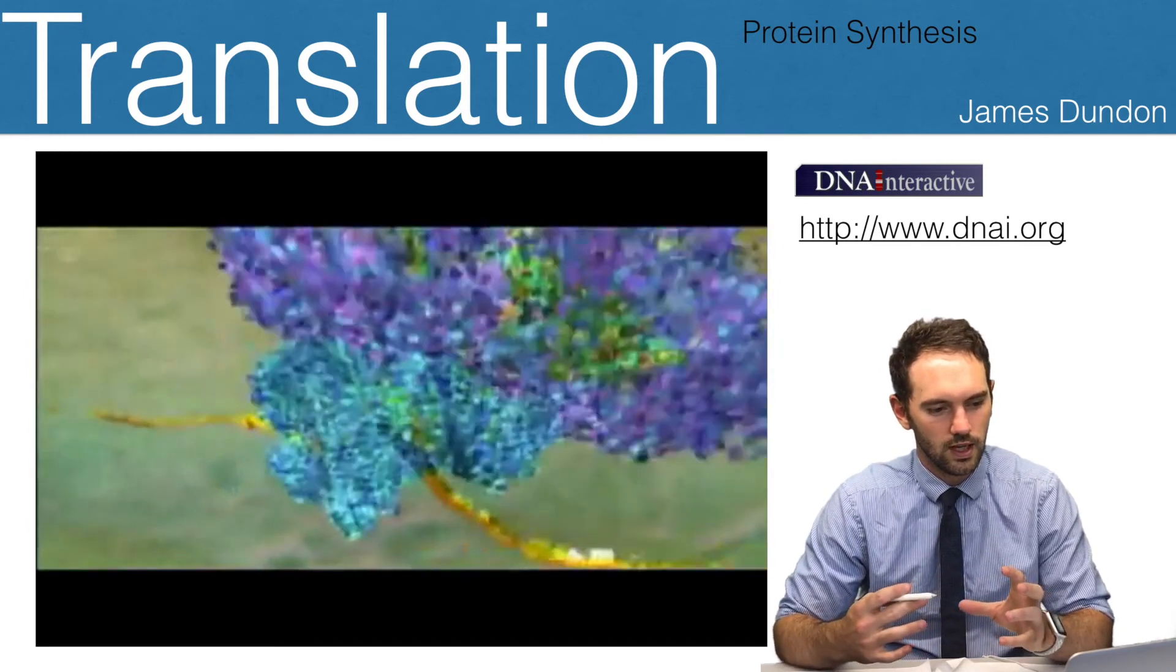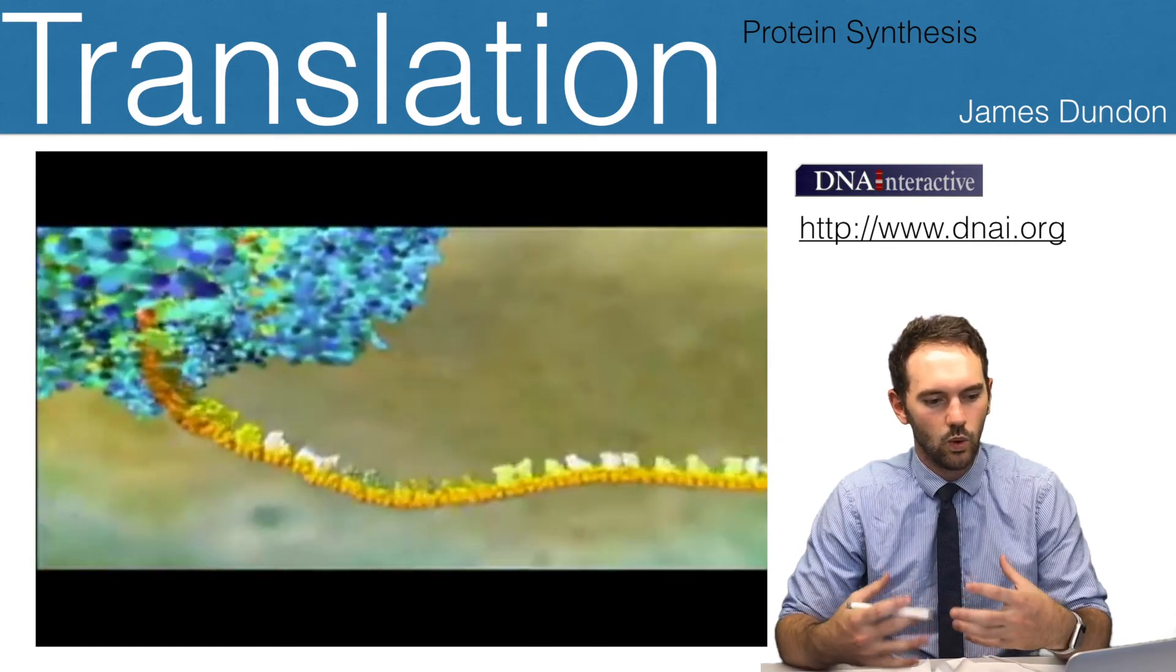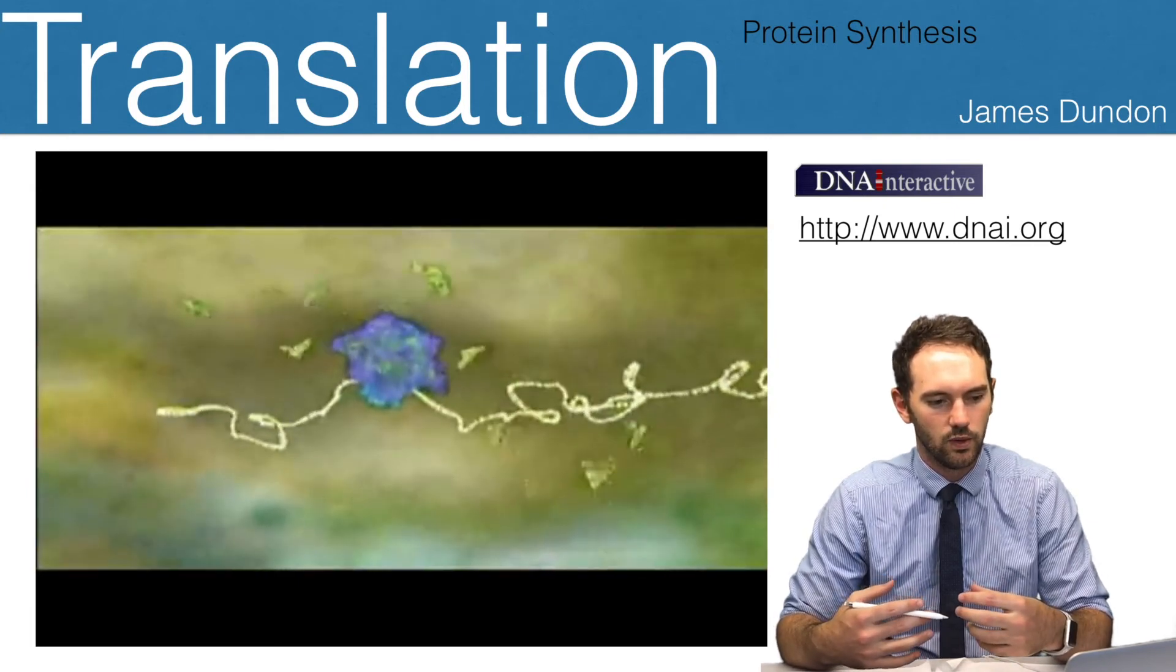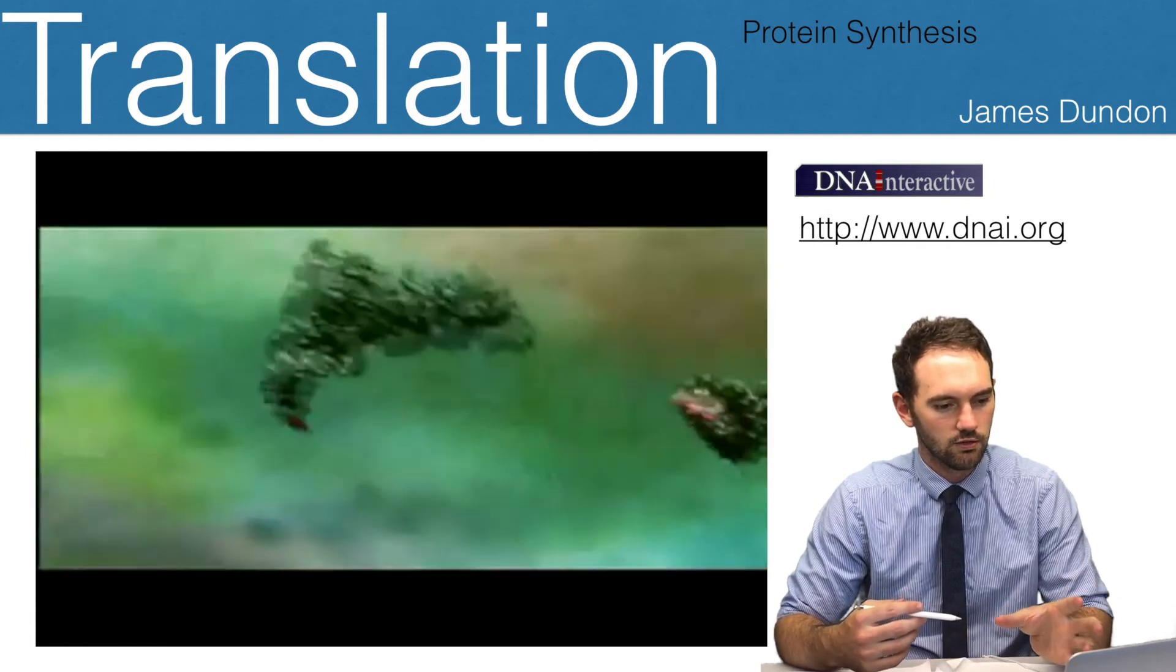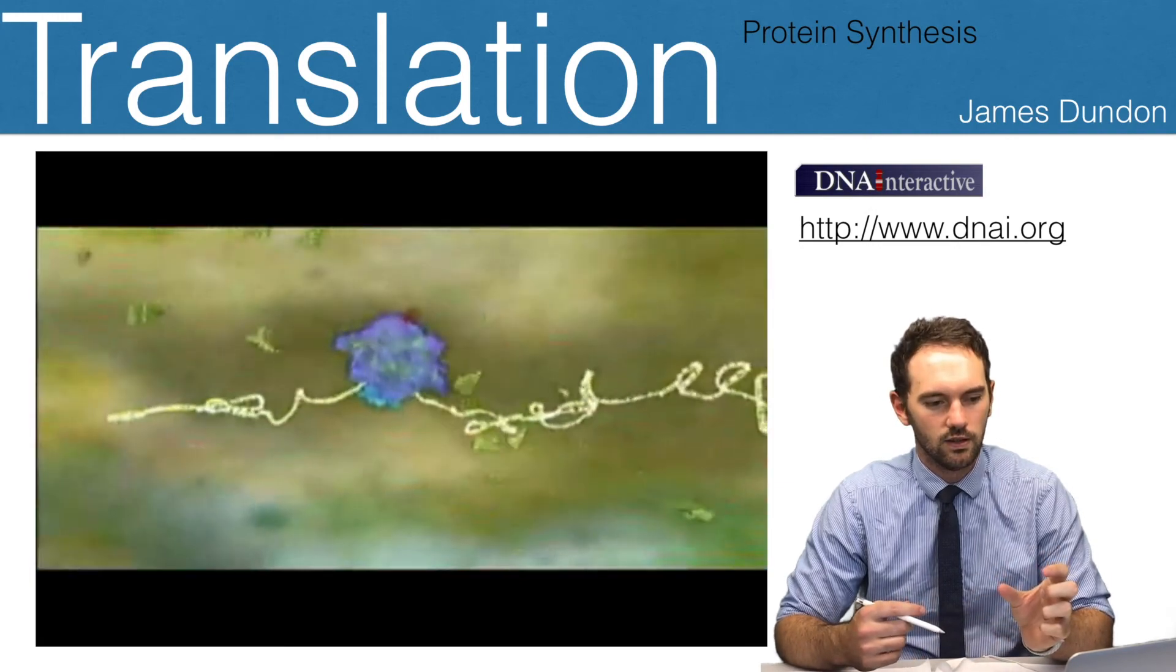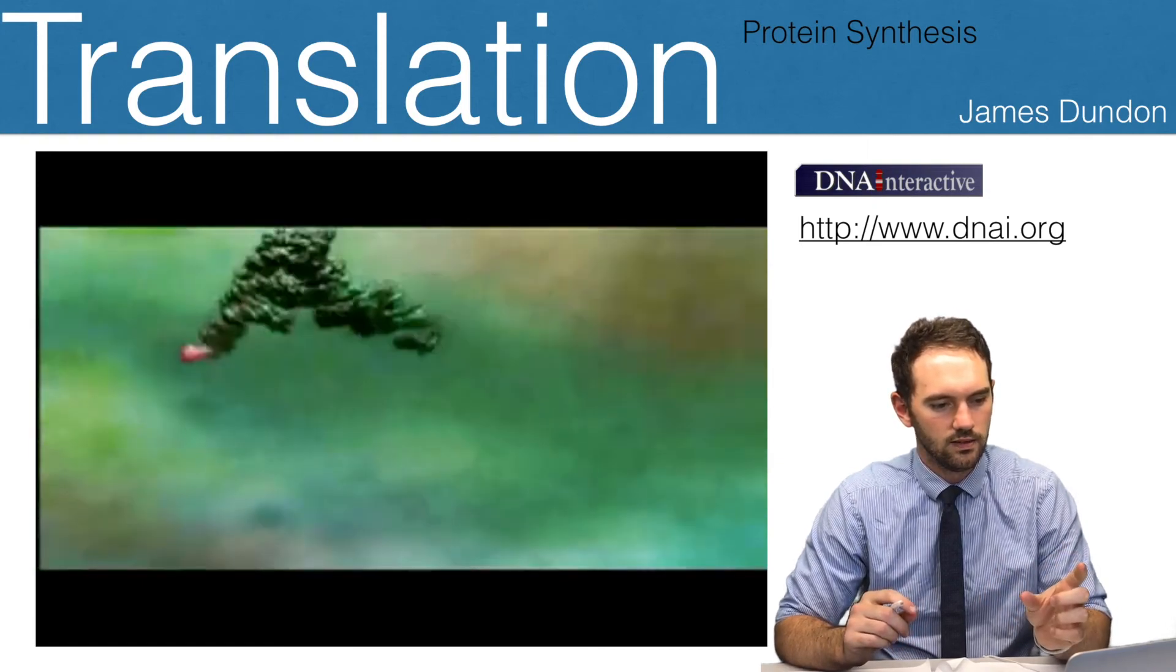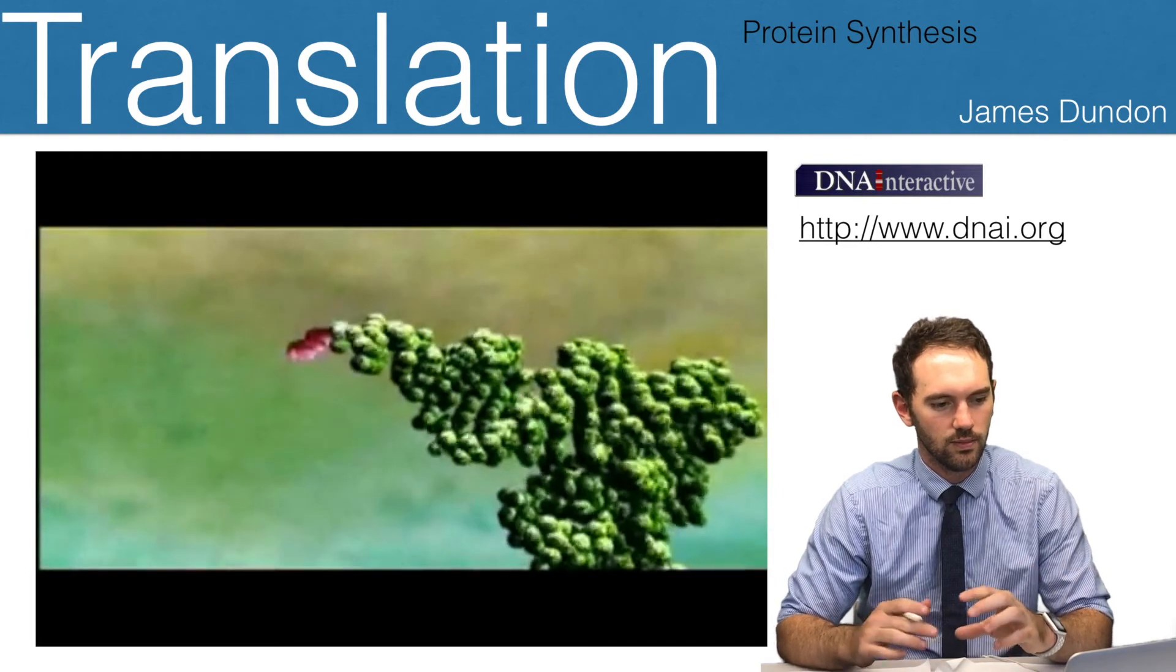Here's our ribosome. You'll notice it's a two-subunit ribosome. It joins onto the mRNA. It waits and scans along to find that first AUG, and then it's going to start matching up with those transfer RNAs. You can see those transfer RNA molecules in green here, and they're each carrying a small amino acid, which is indicated in red.